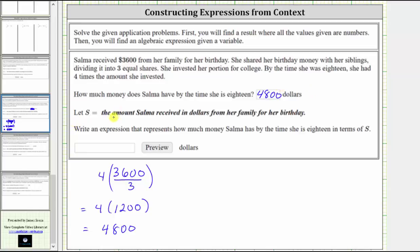For the next part, we're told to let S equal the amount Salma received in dollars from her family for her birthday. We need an expression that represents how much money Salma has by the time she is 18 in terms of S. So for the first part, we were told Salma received $3,600 from her family. And now we're told to let this amount be equal to the variable S. If we substitute S for $3,600, we have the expression four times S divided by three.